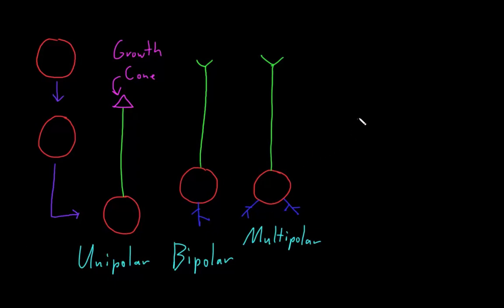The last big category of structural types of neurons is a little different. It has a soma, like all the rest. And then it has one short process coming out of the soma, that then divides into two long processes going in different directions. And these are both axons.